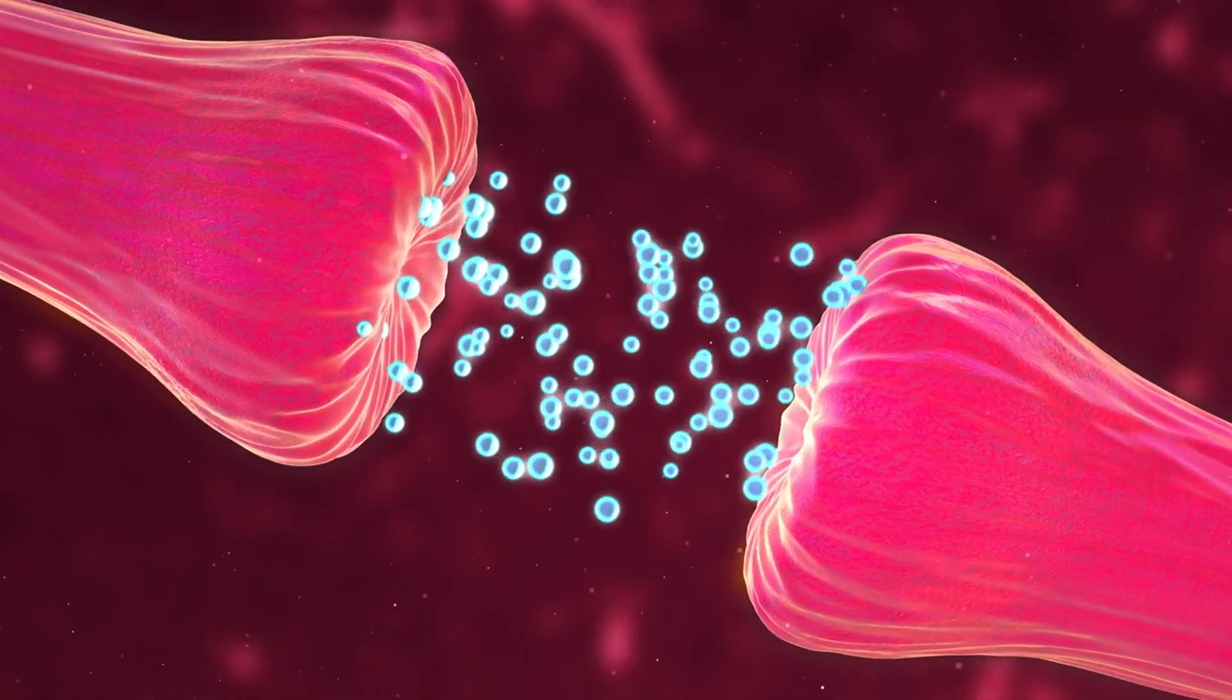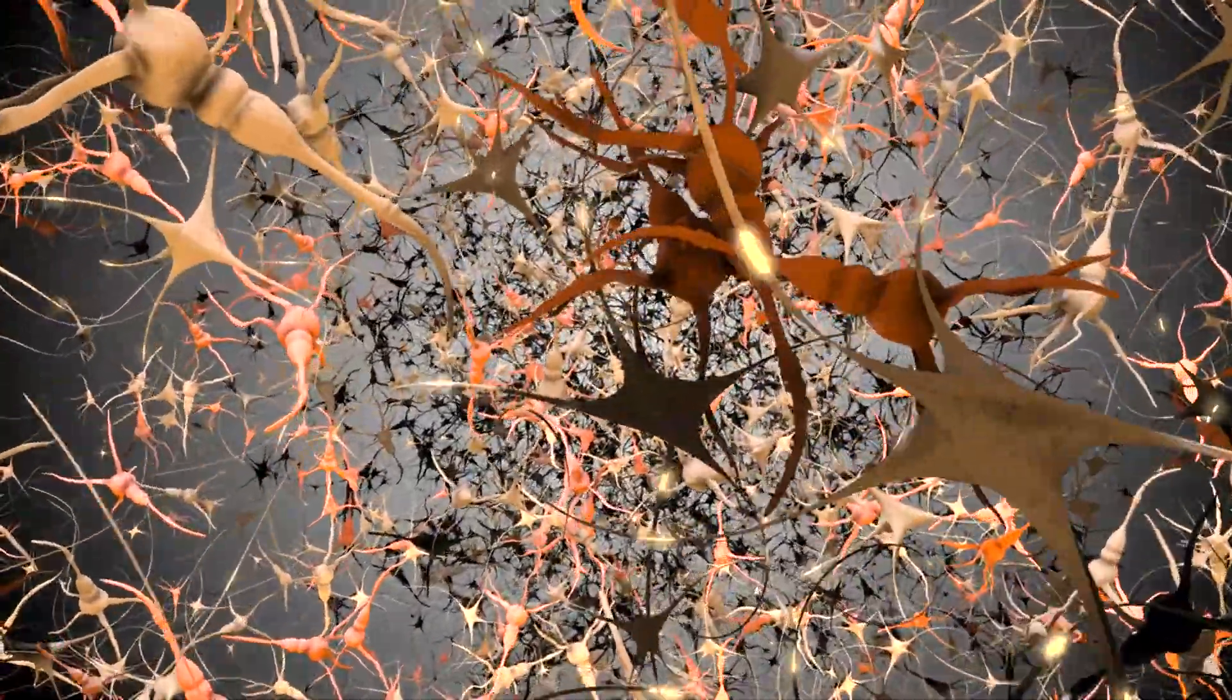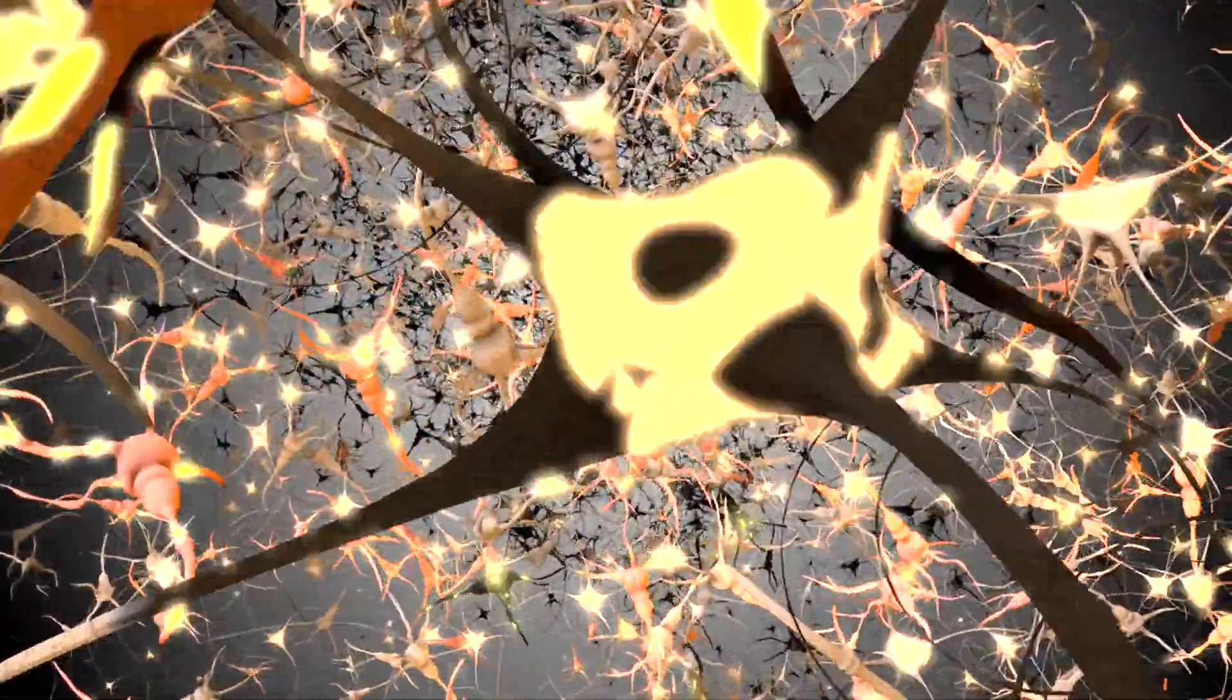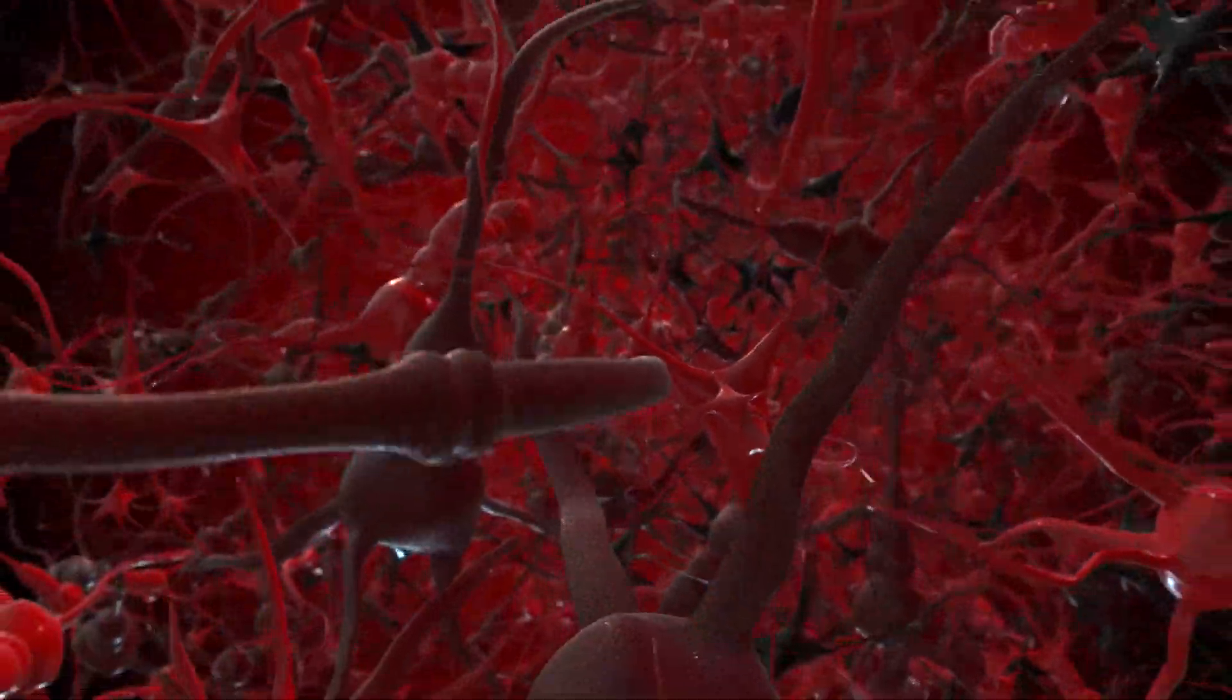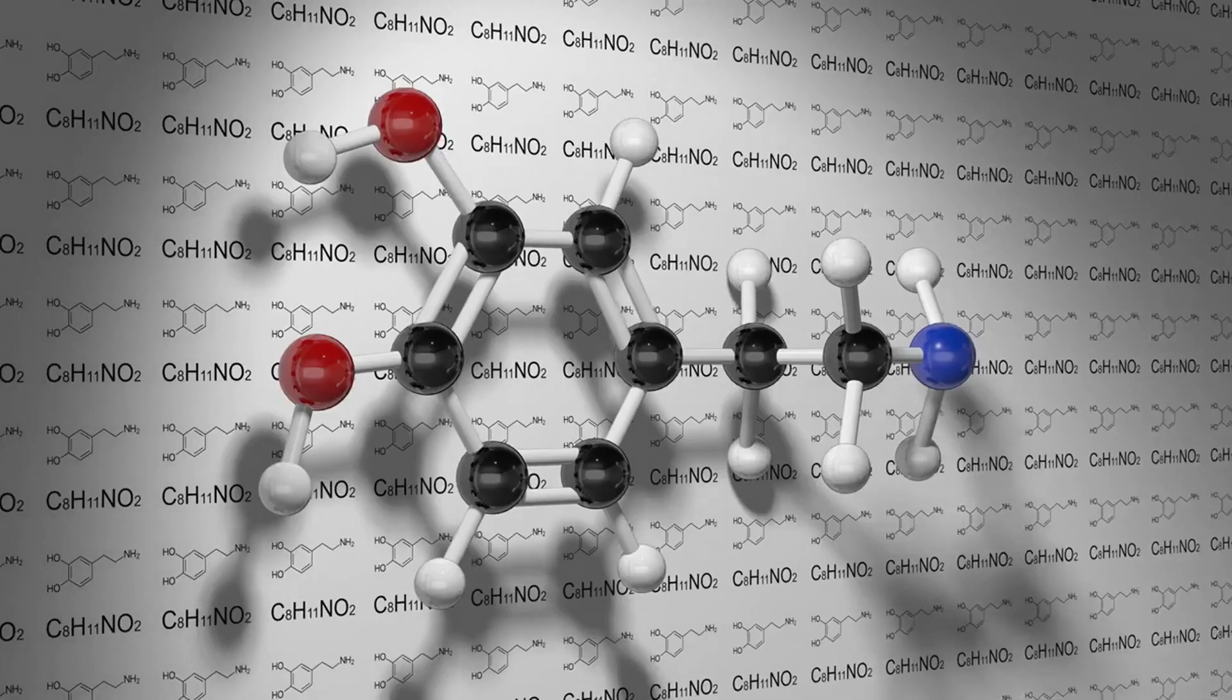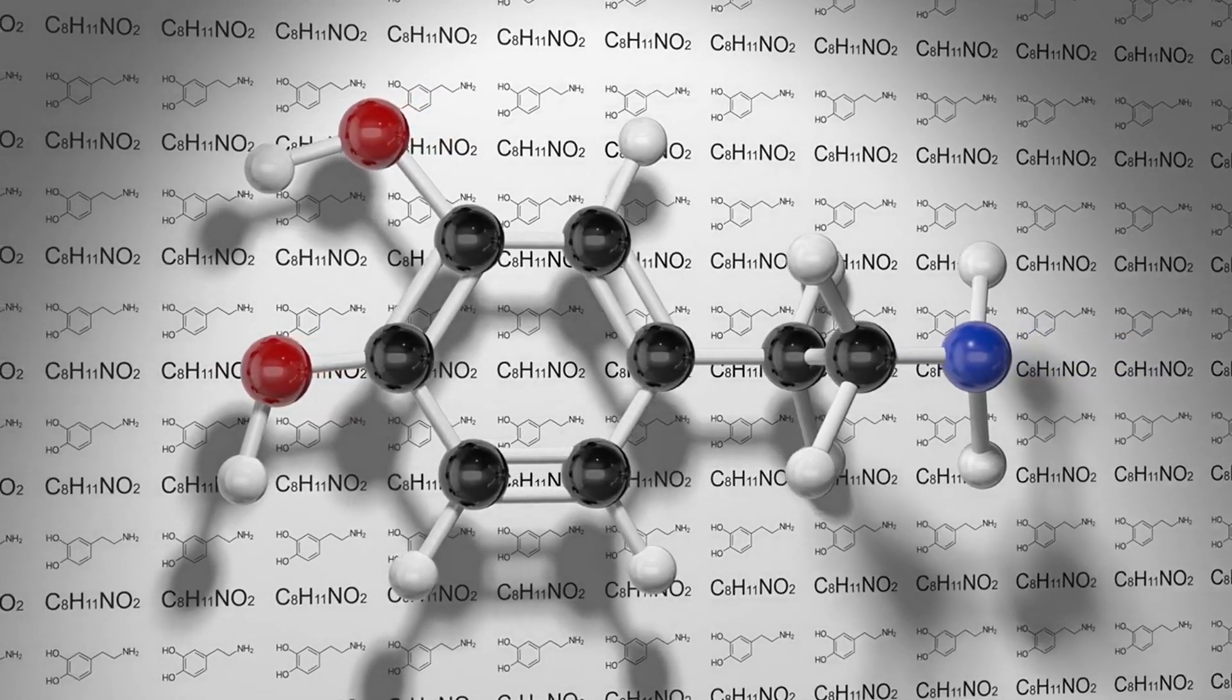Question one: How do neurotransmitters and hormones differ in their effects on behavior? Great question. Neurotransmitters are chemicals that transmit signals between neurons in the brain. They act quickly and have short-term effects on behavior. For example, dopamine can make you feel pleasure almost instantly when you receive a reward.